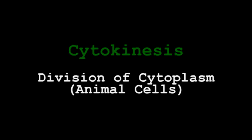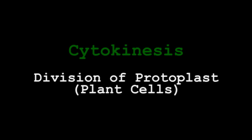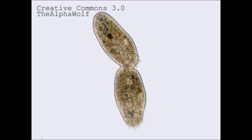Cytokinesis is the division of the cytoplasm in animal cells and the division of the protoplast in plants. It is a much simpler process than karyokinesis. In animal cells, cytokinesis begins with the formation of the cleavage furrow and ends when the mother cell becomes two daughter cells.